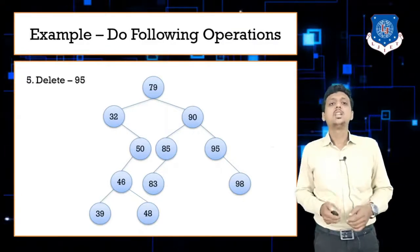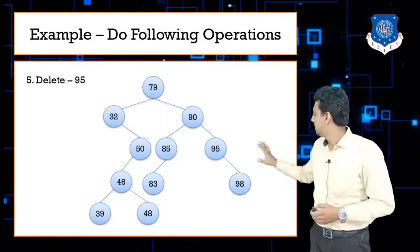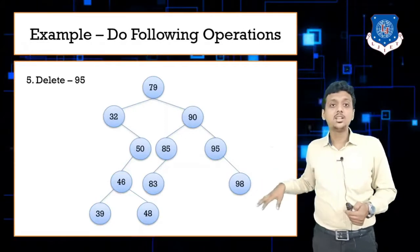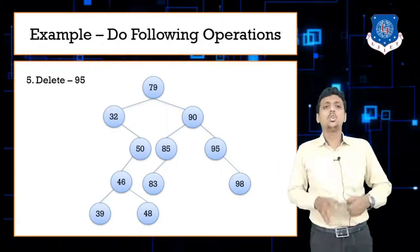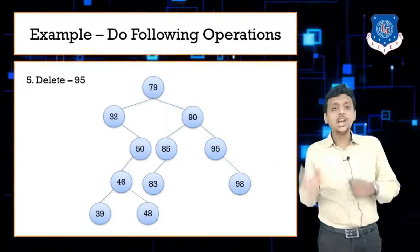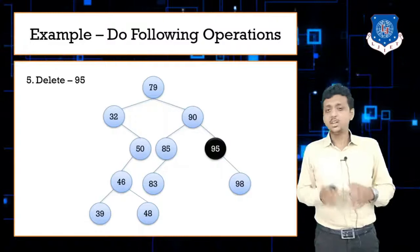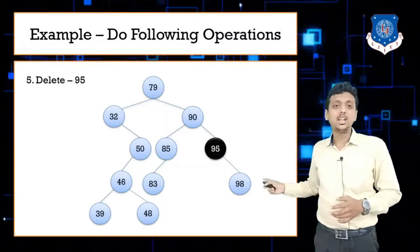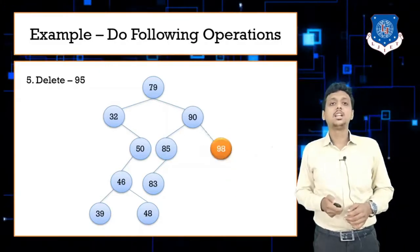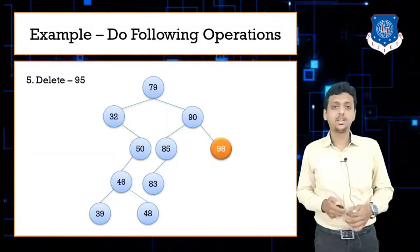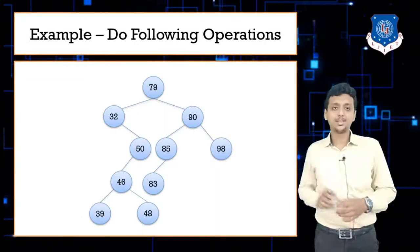Next, delete 95. Does 95 contain any child node? Yes — it has 98 as its child. This is case two, where the child node replaces the parent node. So 95 is deleted and 98 takes its place. After deleting 95, this is the new figure.